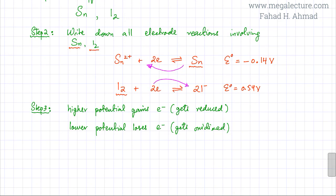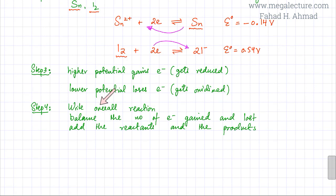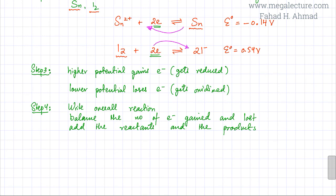Once I've figured out which substance is getting reduced and which is getting oxidized, I need to write the overall equation, so we move to Step 4. To write the overall reaction, the first thing is to balance the number of electrons gained and lost. In this case that's not an issue, because iodine is gaining two electrons and tin is losing two electrons — the number of electrons gained and lost are already equal.